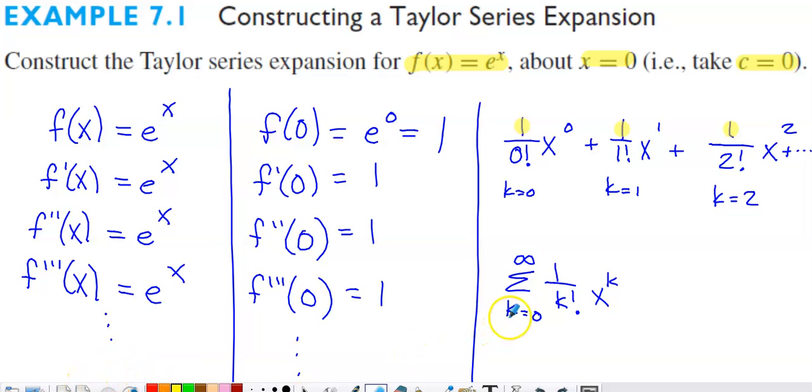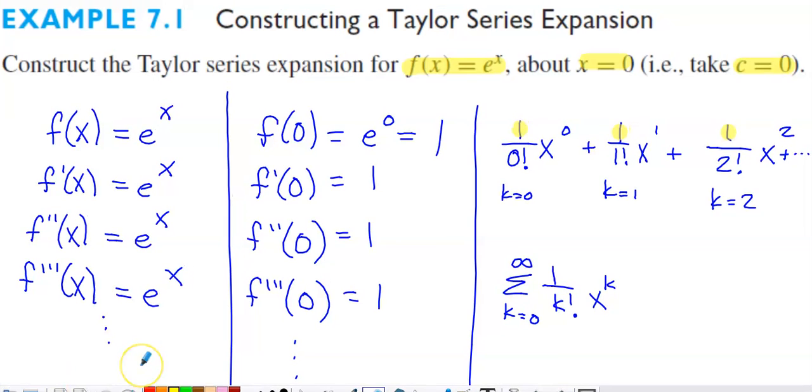If we take enough terms, no matter what the value of x is, we're going to have a close correspondence between the function e to the x and the series representation that we've just produced. One thing to keep in mind is we haven't necessarily proven that this series converges to e to the x. You'd have to use something called Taylor's theorem or Taylor's remainder in order to prove that this series does converge to e to the x.